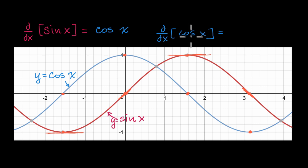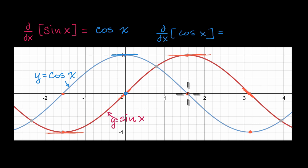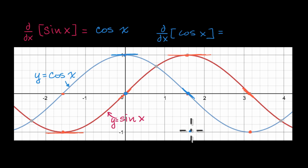So now let's think about cosine of x. Right over here, the slope of the tangent line looks like it is zero. So its derivative function needs to be zero at that point. Hey, maybe it's sine of x — let's keep trying. Over here, cosine of x — it looks like the slope of the tangent line is negative one. And so we would want the derivative to go through that point right over there. But this is starting to seem like the derivative of cosine of x could not be sine of x.